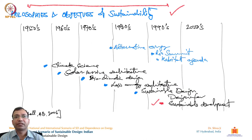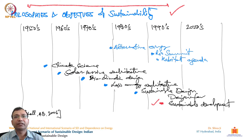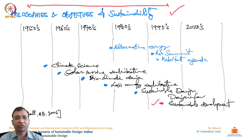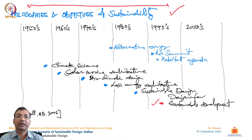Here we can see how this has progressed. We start by understanding how the objectives of sustainability have evolved over the last few decades. In the 1950s, there was no particular discussion or mention of sustainability or environmental concerns.